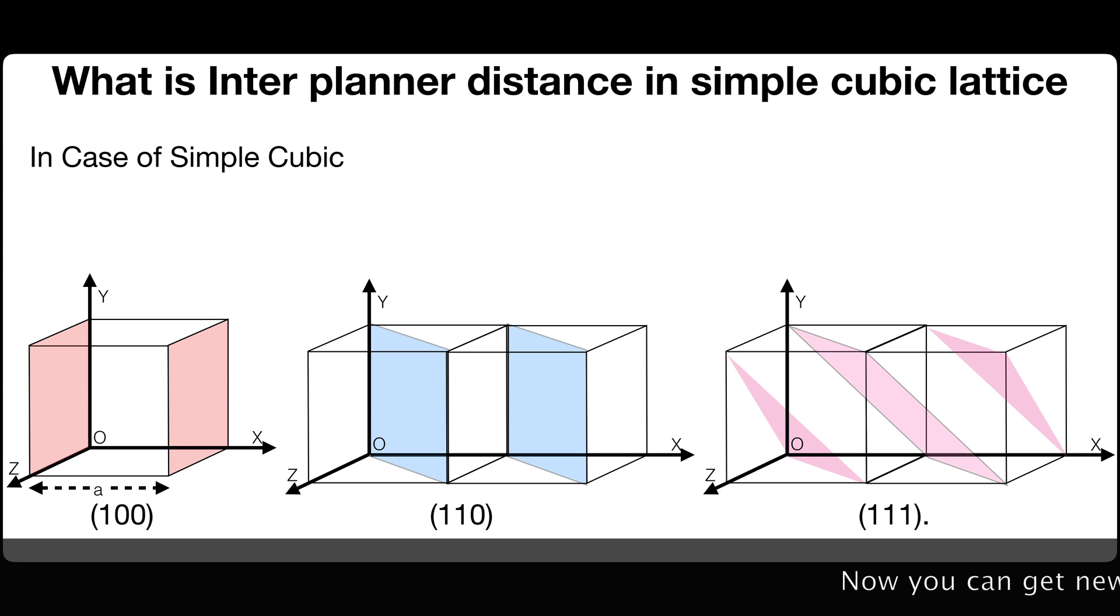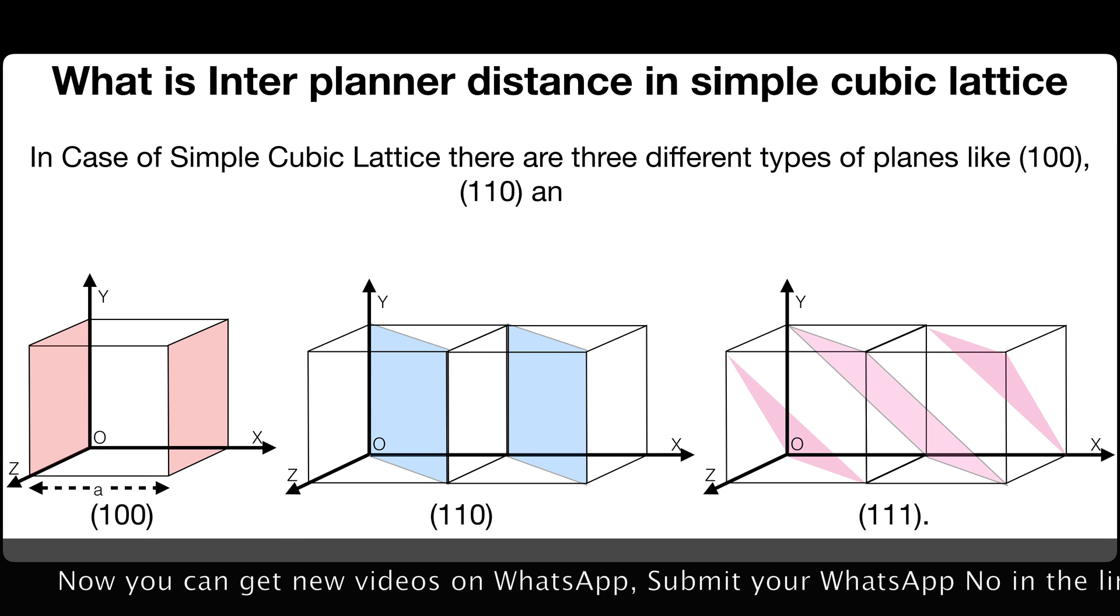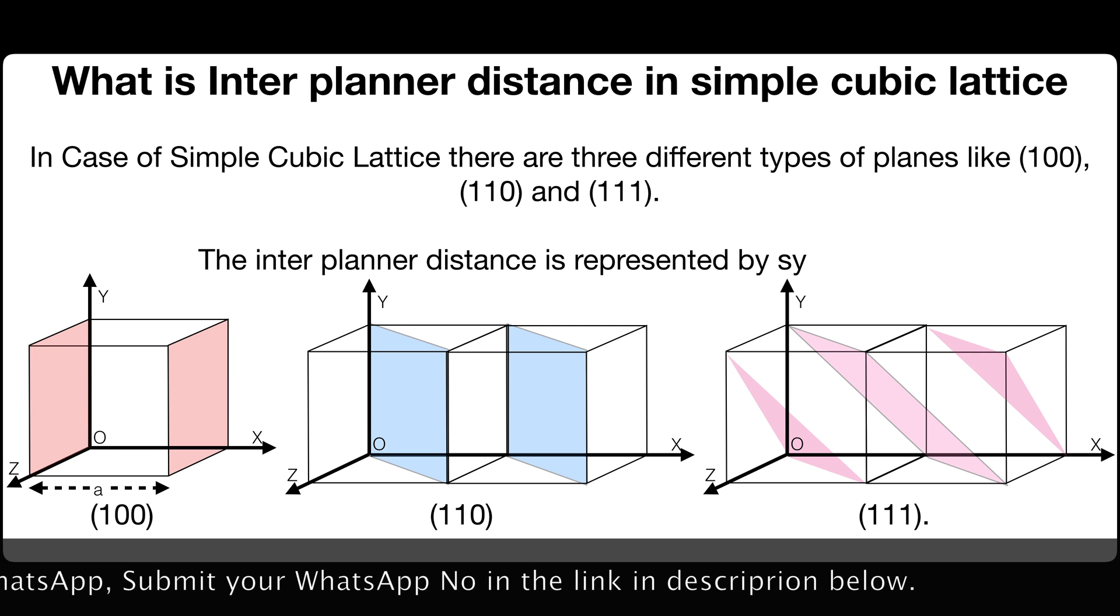In case of simple cubic lattice there are three different types of planes like 100, 110 and 111. The interplanar distance is represented by symbol D.